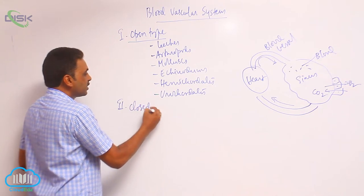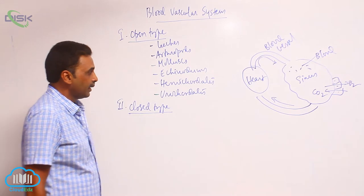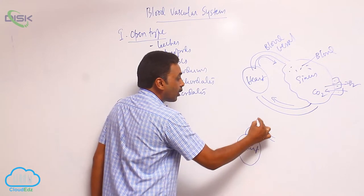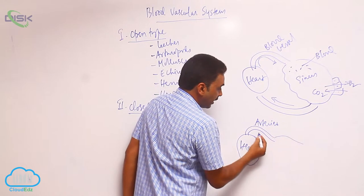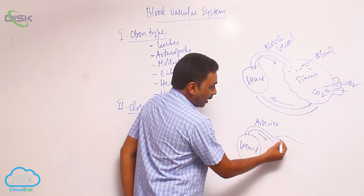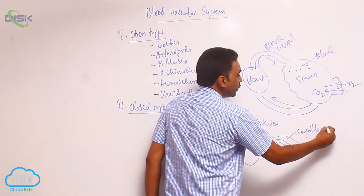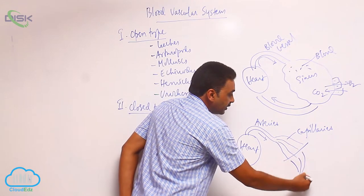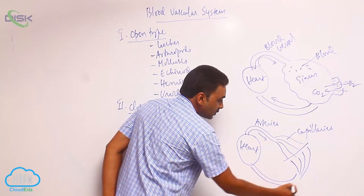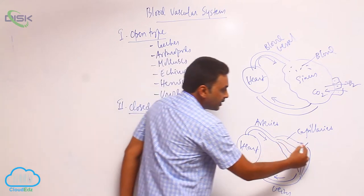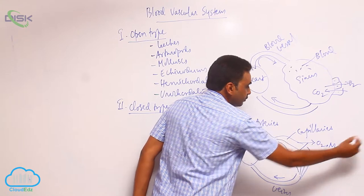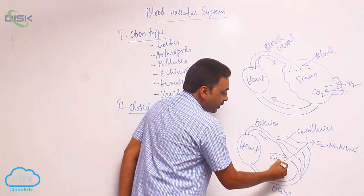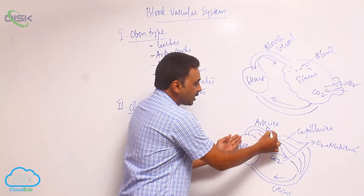The second type is the closed type of blood vascular system. In the closed type, from the heart there are arteries. Arteries carry blood away from the heart and divide into capillaries. The capillaries combine together to form veins. Near the capillaries, diffusion of gases and nutrients occurs, and waste material and carbon dioxide enter the blood. This gives oxygenated blood in arteries and deoxygenated blood returning in veins.